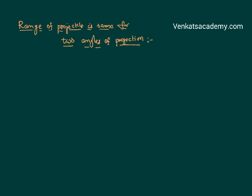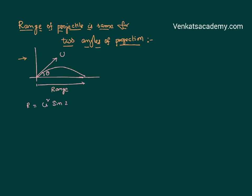Today we are going to talk about the range of a projectile. A projectile is a body which moves both along the x and y axis simultaneously because it is projected with an angle theta to the horizontal with an initial velocity u. We have proved in the previous post that it takes a path of a parabola. The maximum horizontal distance it travels along the x axis is called the range, and we have derived the equation for range R as u squared sine 2θ divided by g.